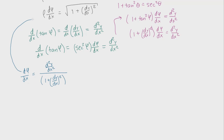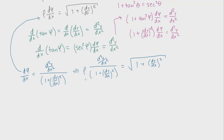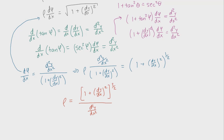Plugging this expression for d(phi)/dx back into rho * d(phi)/dx = sqrt(1 + (dy/dx)²), then solving for rho by dividing by the quotient, we get the radius of curvature formula. Rewriting the square root as a (1/2) exponent and combining exponents (1 + 1/2 = 3/2), the result is: rho = (1 + (dy/dx)²)^(3/2) / (d²y/dx²). This gives the radius of curvature for any path defined as a function y(x).